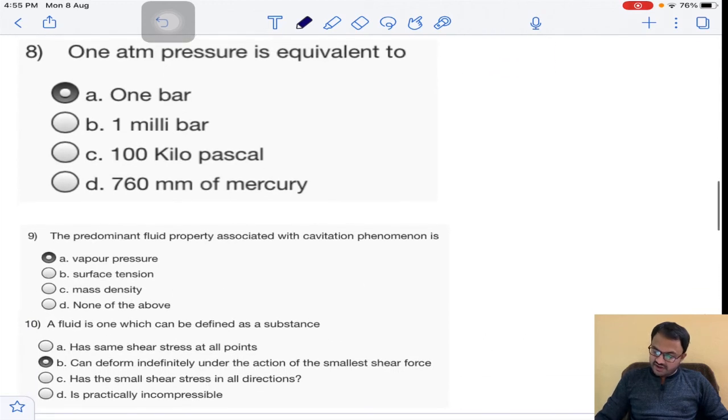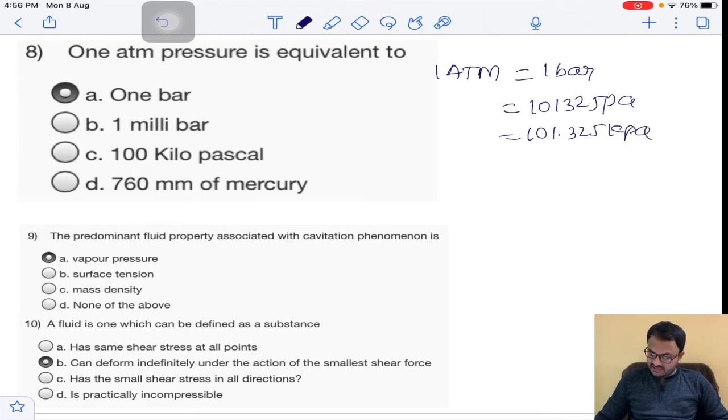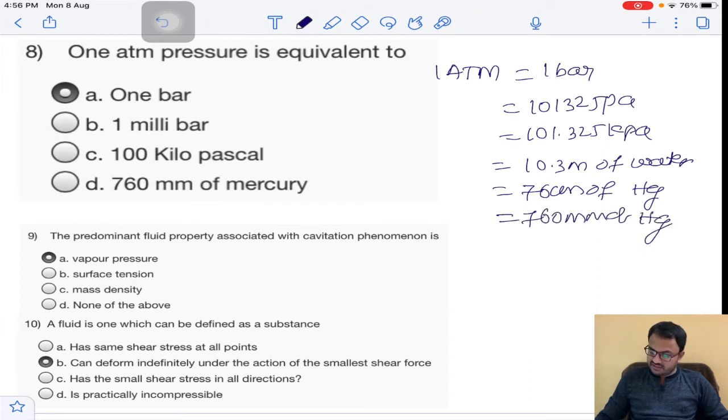Eighth question: one atmospheric pressure is equal to 1 bar, and this is also known as 101,325 Pascal or 101.325 kPa, approximately 100 kPa. It's also known as 10.3 meters of water or 76 centimeter of mercury, that is 760 mm of mercury. Out of all options, the exact value is 1 atmospheric pressure equals 1 bar. Answer is A. Option D is wrong completely - 1 millibar equals 10^-3 bar.